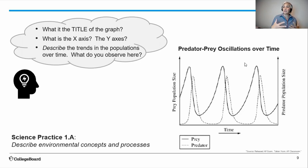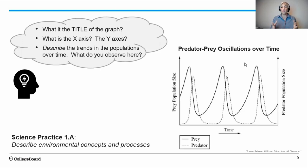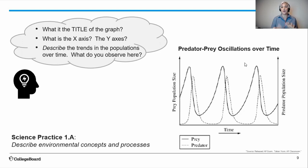The final question for this part: what do the lines look like on this graph? Describe the trends in the populations over time. The title tells you the lines are oscillating — going up and down in a regular manner — but the lines don't completely overlap and the peaks and valleys aren't quite the same. Overall, we are now doing science practice 1.a, which is description of environmental concepts and processes. This is a foundational skill for APES that you'll be asked to demonstrate throughout the AP exam.